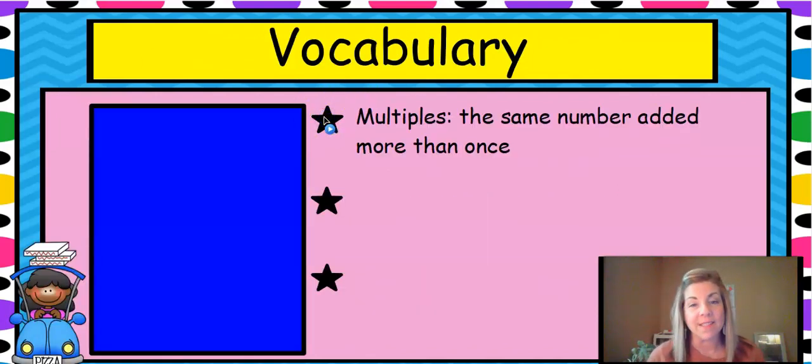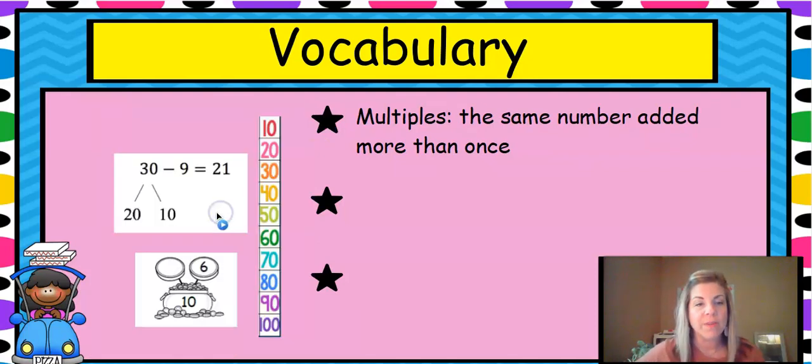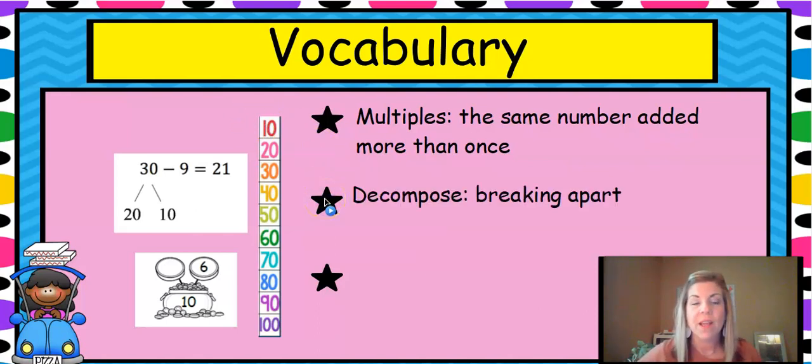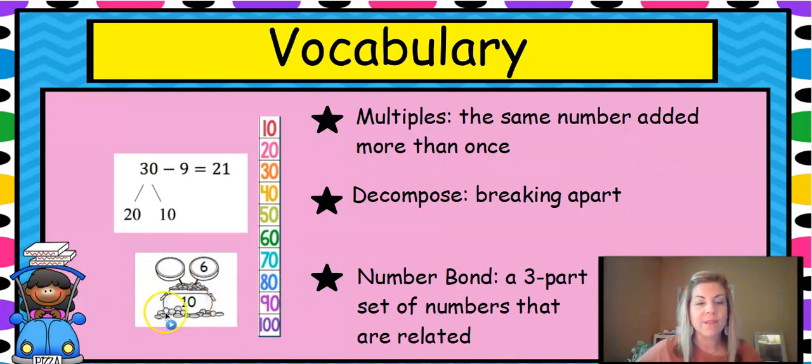So we're going to do something new today that's going to really help us with subtraction of two digit numbers and make it super easy. Our vocabulary for this lesson: multiples is one of the words, the same number added more than once. So here's our picture. These are multiples of 10. So 10 plus 10 is 20 plus 10 is 30 plus 10 is 40 and so on. Decompose is the next word, and it's breaking apart. And this number bond shows us that when we take out a 10, we're actually breaking it down or taking part of it out. And the last one, of course, is our number bond, the three parts, numbers that all relate to each other.